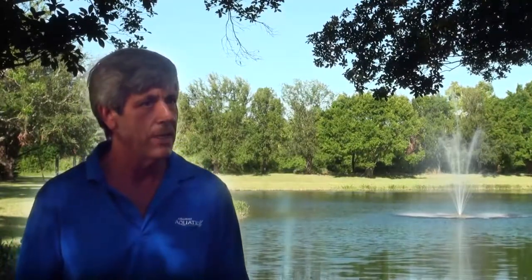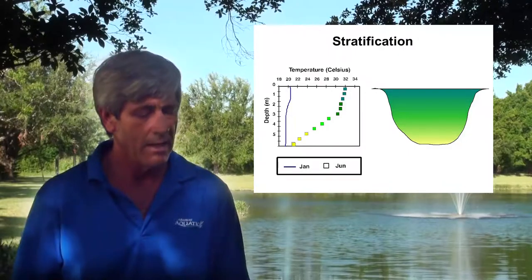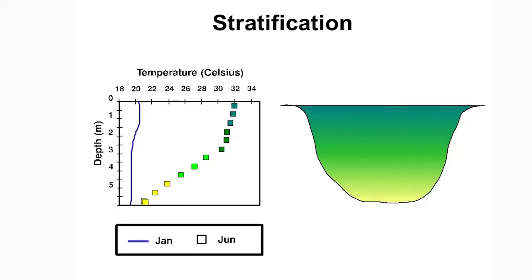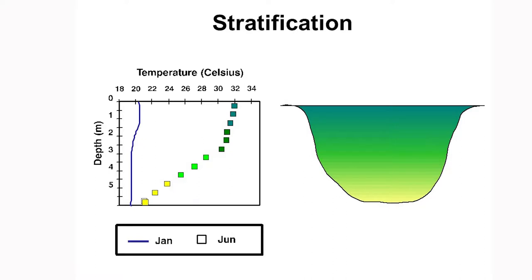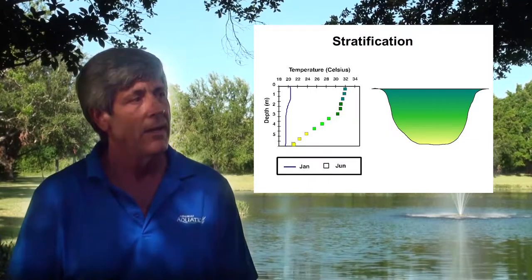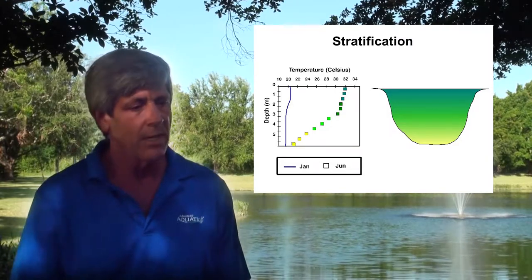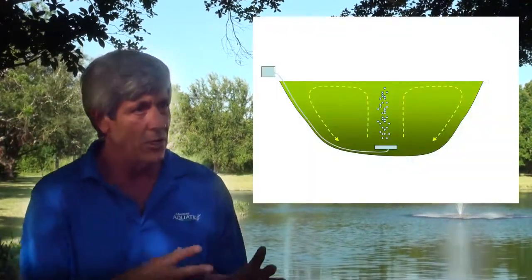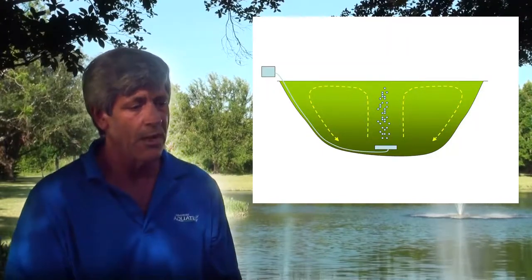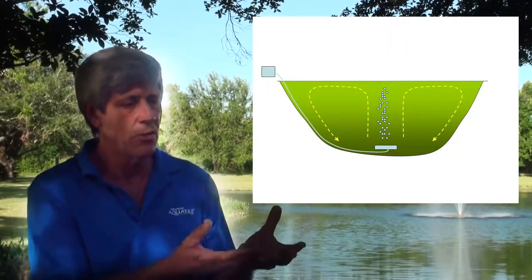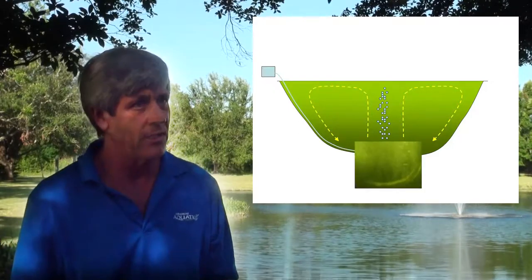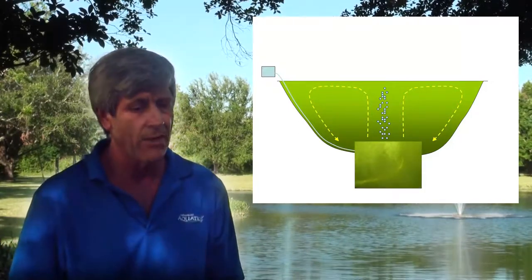The aeration system itself is going to destratify the pond. What happens is the pond will stratify throughout the year depending on the temperatures. You'll get cold water on the bottom of the pond and warmer water as you go higher into the water column. What an aeration system does is it pumps air into the lake into a diffuser, and the diffuser actually pushes that water up to the surface, circulating the water and breaking the stratification.